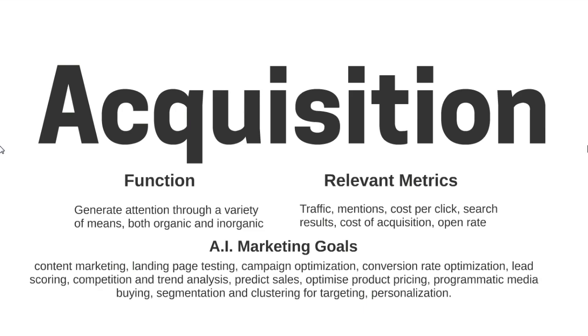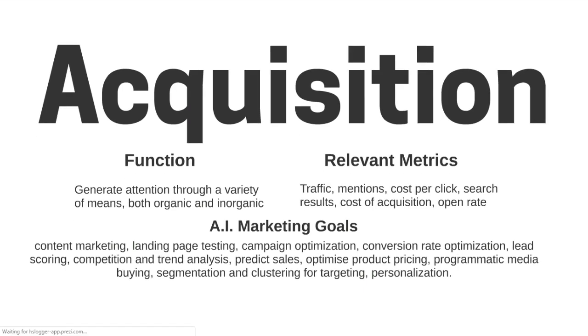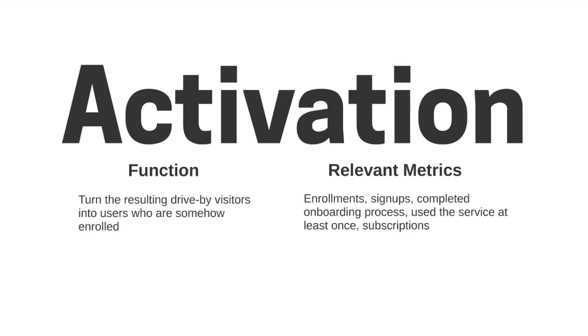AI can also help with competition and trend analysis, predicting sales, optimizing product pricing, programmatic media buying, segmentation and clustering for targeting, and personalization. Then we move to the next stage: Activation. At this stage the function is to turn the resulting drive-by visitor into users who are somehow enrolled.